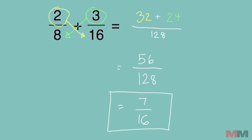Okay, here's your answer. First do 8 times 16, that gives you 128. Now do the numerator to denominator. 2 times 16, that's 32. Add it to 3 times 8, 24. 32 plus 24, that gives you 56 over 128. You can reduce that fraction by dividing by 8, and you get 7 over 16.